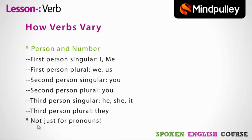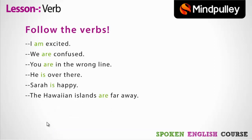It's not just for pronouns — let's take a few examples. 'I am excited.' 'We are confused.' Here, I is first person singular; we is first person plural; you is second person singular or plural; he is third person. 'Sahara is' — again third person. 'The Hawaiian Islands are far away' — Hawaiian Islands, third person plural, uses 'are'. So verb changes according to person.